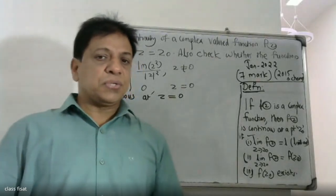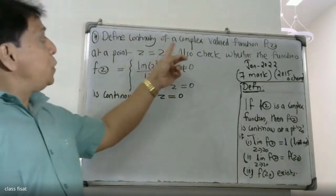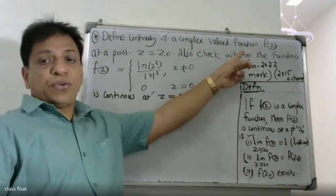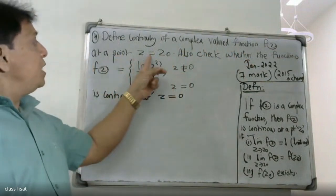Good morning, students. This is an Osmania University question. Define continuity of a complex-valued function f of z at a point z equals z₀.